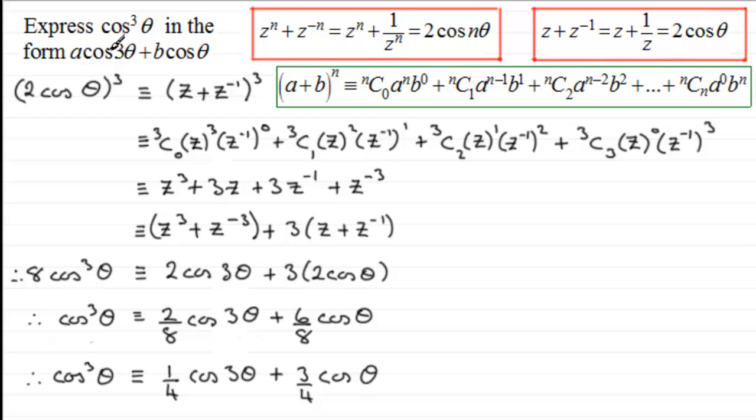So you can see that I've written it now in this format. Something cos 3θ plus something cos θ. If we were asked to work out the values of A and B, A would have been 1/4 and B would have been 3/4. So it has that particular format.